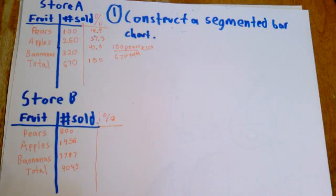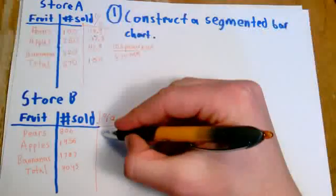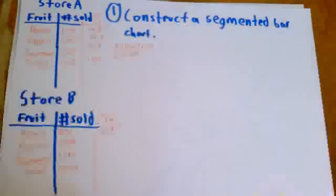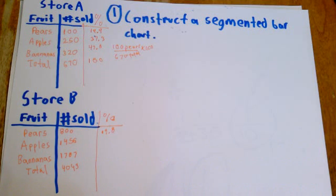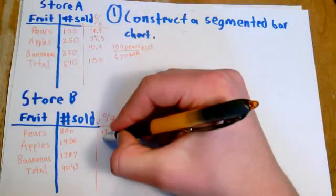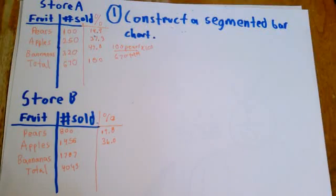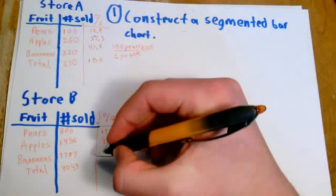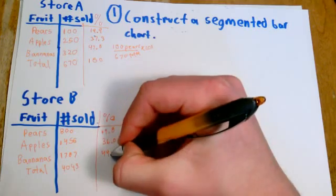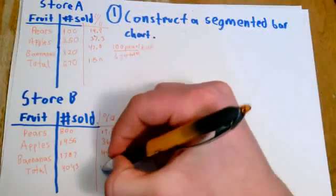So now divide 800 for pears by 4,043 and you get 19.8. Apples, 1,456 divided by 4,043, you get 36.0. Divide 1,787 by 4,043 times 100 and you will get 44.2. And they should add up to 100.